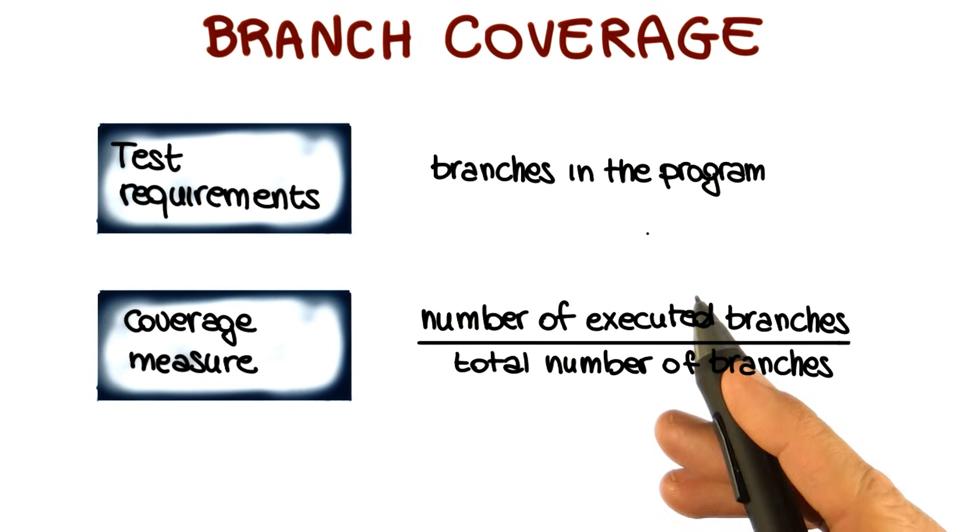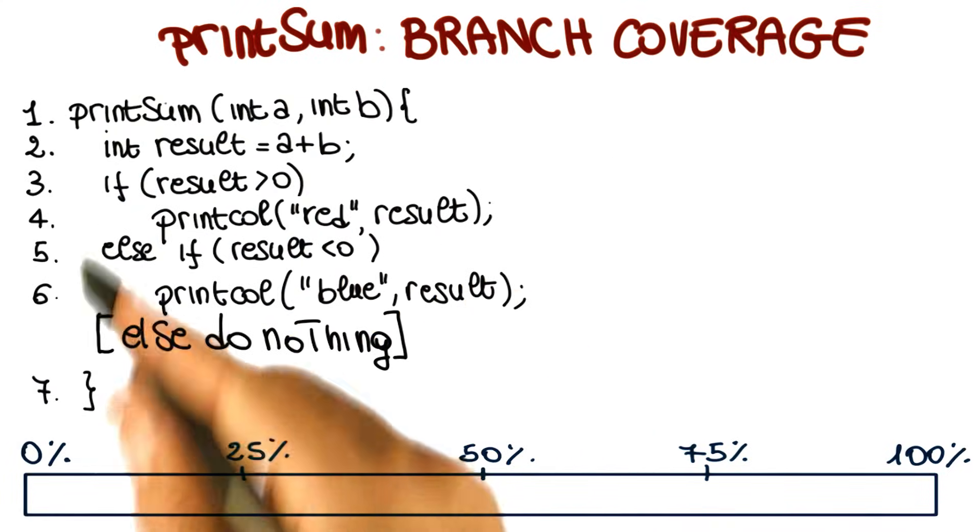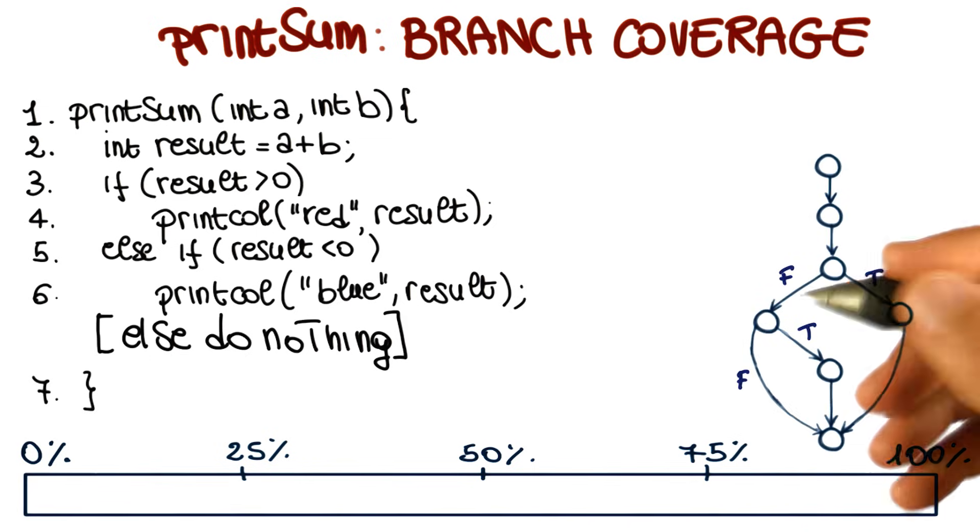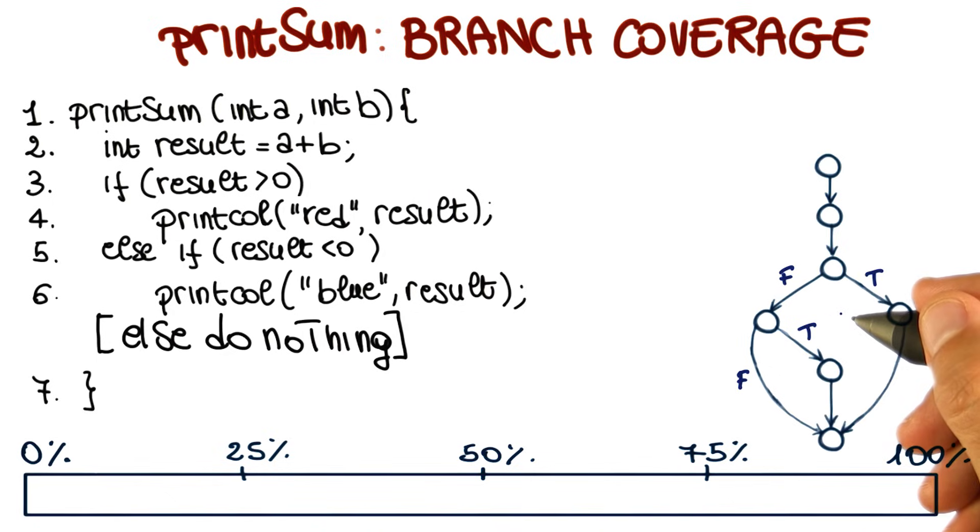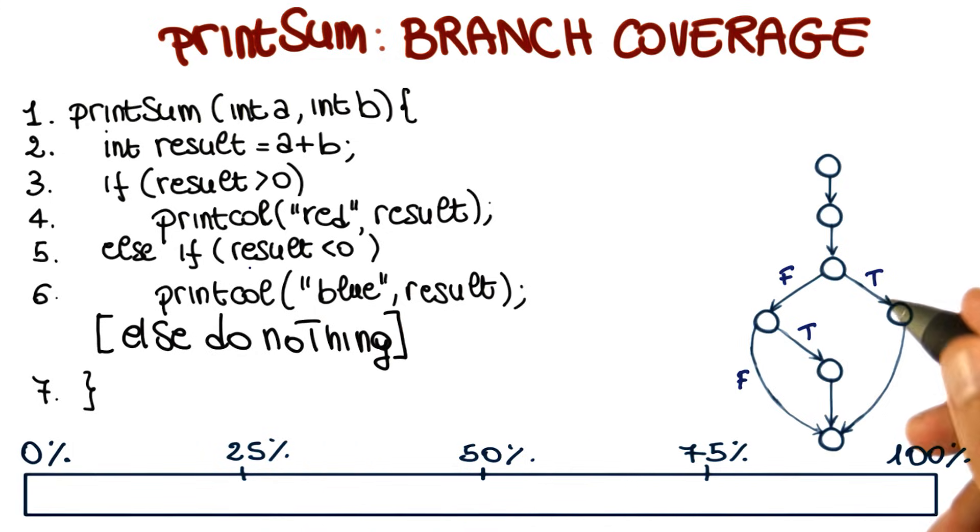So let's look at that using our example. Now we're looking back at our print sum example, and in addition to the code, I also want to represent the CFG for the program. Let's start by looking at how many branches we have in our code, which means how many test requirements we have. In this case, there are two decision points: the first one that corresponds to the first if, and the second one that corresponds to the second if.